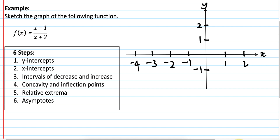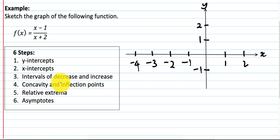Hello everyone. In this video, you will learn how to sketch the graph of a rational function with 6 easy steps: Y-intercept, X-intercept, intervals of increase and decrease, concavity and inflection points, relative extrema, and asymptotes.